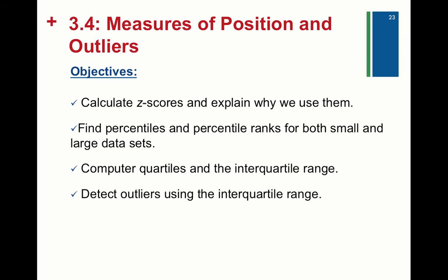We're going to use both of those measures in this section when we calculate what's called a z-score. We're going to explain how to calculate it, what it means, and what it's useful for. Z-scores are going to be the most important thing we do throughout the course. We're also going to find percentiles and talk about percentile ranks briefly, then compute quartiles and the interquartile range, and detect outliers using the interquartile range - giving us a formal way to say a value is or is not an outlier.